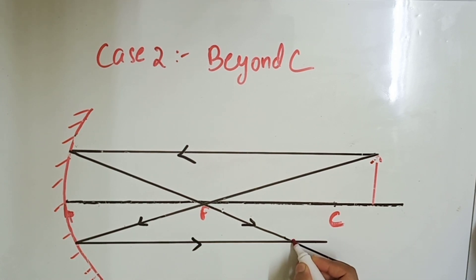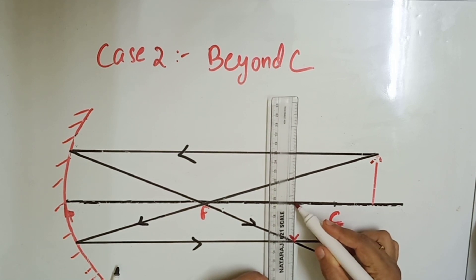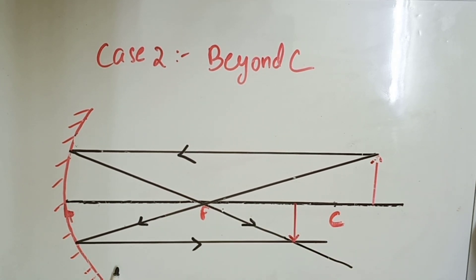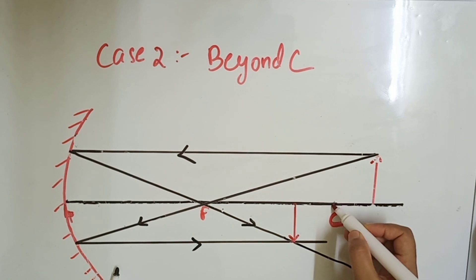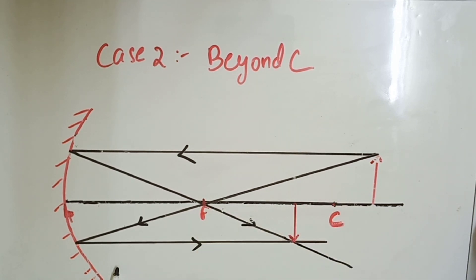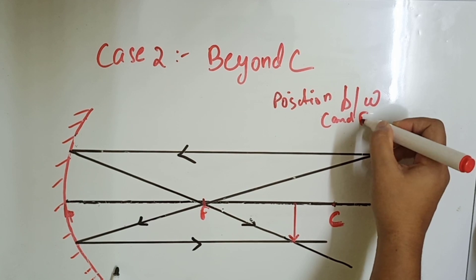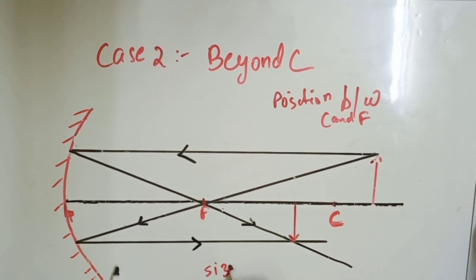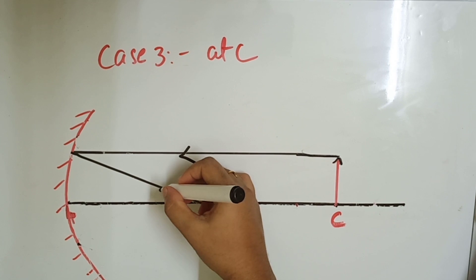Where these two reflected rays meet is between C and F. Since we started from the tip of the arrowhead, at that intersection point you get the image tip, then draw down to the principal axis. The image is smaller than the object. So for the object beyond C: position of image is between C and F, size is diminished, and nature is real and inverted.